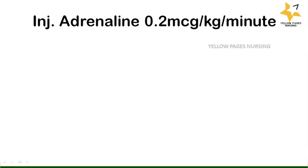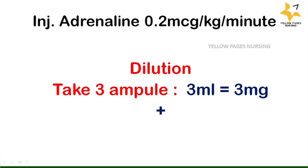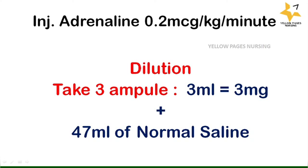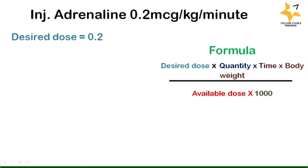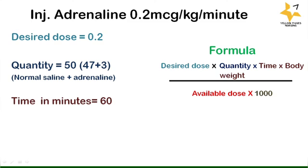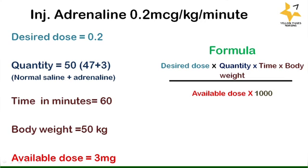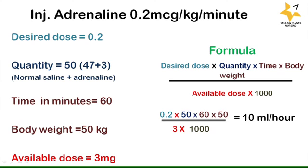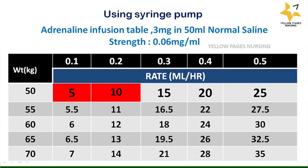Next, Example 2: injection adrenaline 0.2 microgram per kg per minute. For dilution we take 3 ampoules, that is 3 ml containing 3 mg, plus 47 ml of normal saline. The desired dose is 0.2, quantity is 50 ml, time in minutes is 60, body weight is 50 kg, and available dose is 3 mg. Applying all values into the formula, we get the answer: 10 ml per hour.